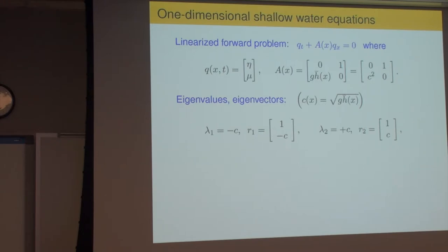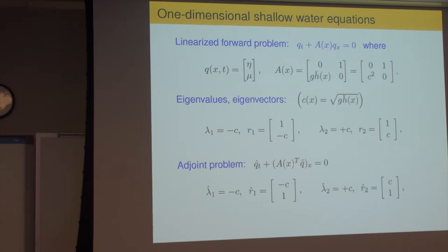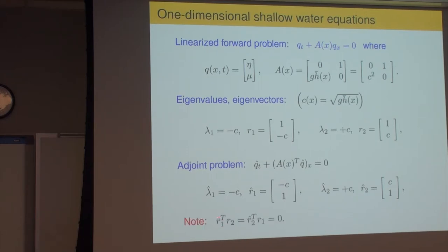The adjoint equation looks exactly the same, except it involves A^T inside the x-derivative. The eigenvalues are the same, but the eigenvectors change — they're now (-C, 1) and (C, 1), the right eigenvectors of A^T, which are the left eigenvectors of A. This is important: being the left eigenvectors of A, they're orthogonal to the right eigenvectors of A. So R1-hat is orthogonal to R2, and R2-hat is orthogonal to R1. We'll see why that's important in a moment.